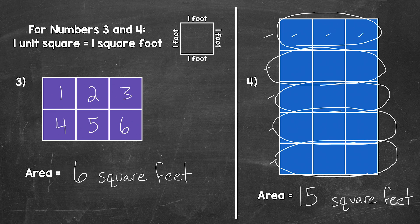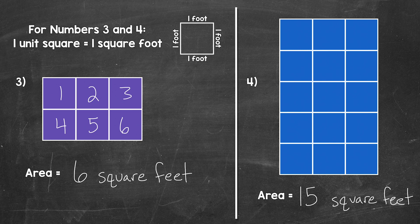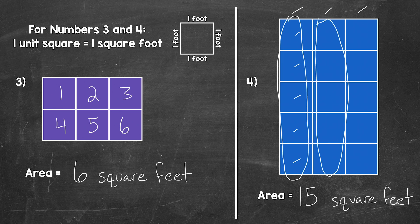Now going off of that, can we skip count the other way as well? So taking a look at the columns — remember, columns are vertical, so they go up and down. We have one, two, three columns, and in each column we have one, two, three, four, five squares. So we can skip count by five: five, ten, fifteen. So we get 15 square feet that way as well. Skip counting is a good strategy that we can use. Now can we count each individual square? Absolutely — we will get 15 square feet that way as well. But skip counting can speed up the counting process.